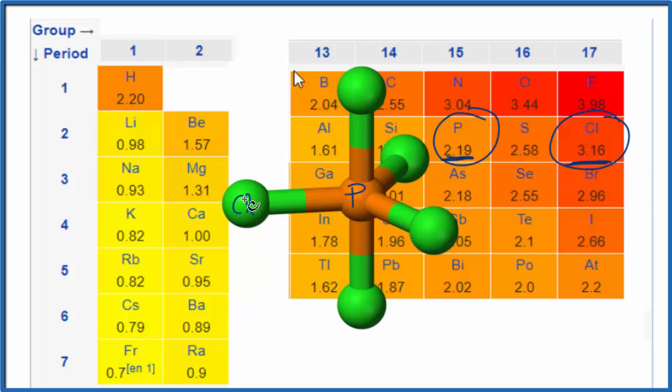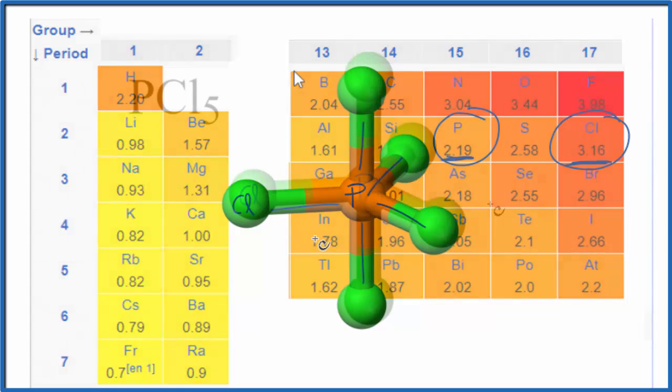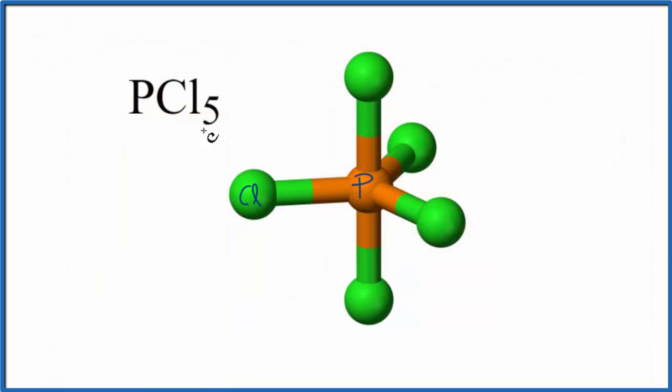So the bond between the phosphorus and the chlorine, each one of these bonds here, that's going to be a polar bond. But overall we need to look at the structure here, the 3D structure, to figure out if this is going to be a polar molecule. We can have polar bonds but the molecule could still be nonpolar.